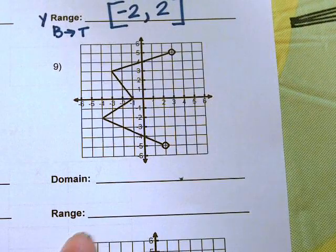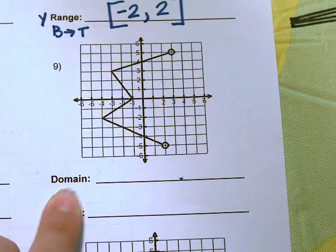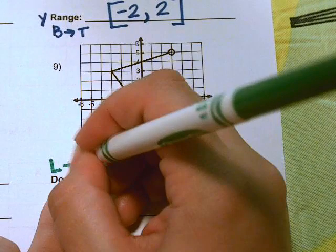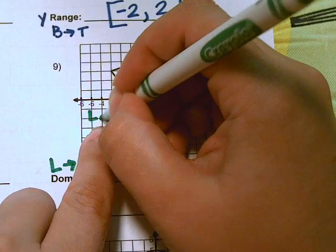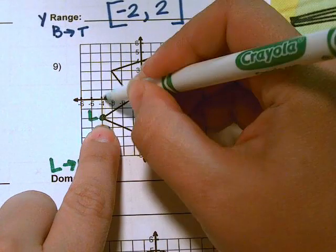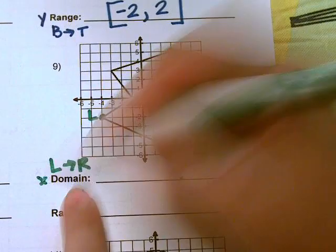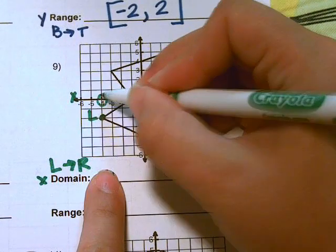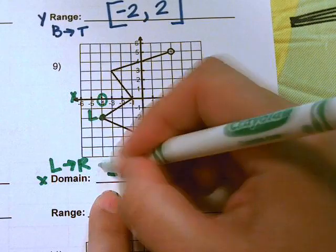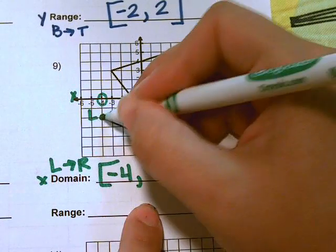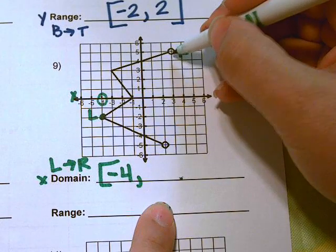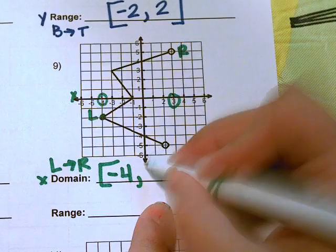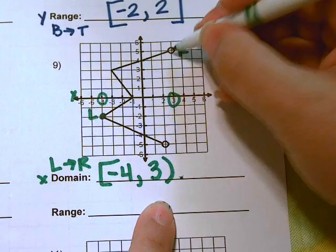Go ahead and pause the video and try number 9. The domain goes from left to right. The leftmost point has an x-value of negative 4 — we use a bracket because it's solid. The rightmost point has an x-value of 3 — we use a parenthesis because it's an open circle.